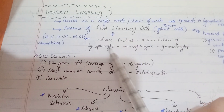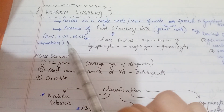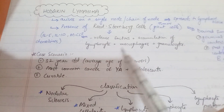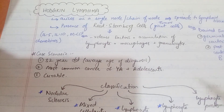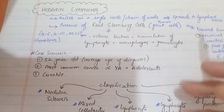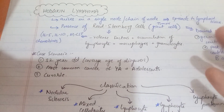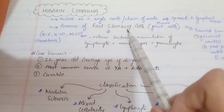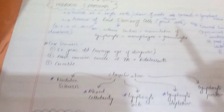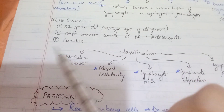Reed-Sternberg cells release factors — chemo-attractants — which cause accumulation of other lymphocytes, macrophages, and granulocytes, attracting all of these cells toward the Reed-Sternberg cells present in the lymph node.